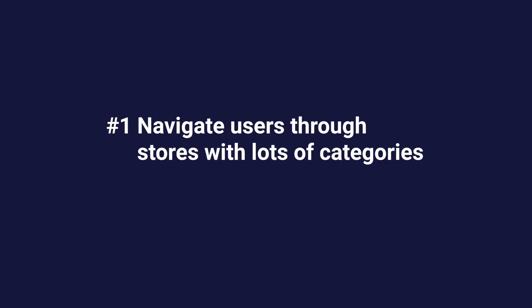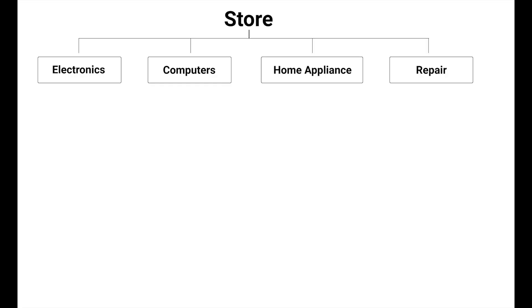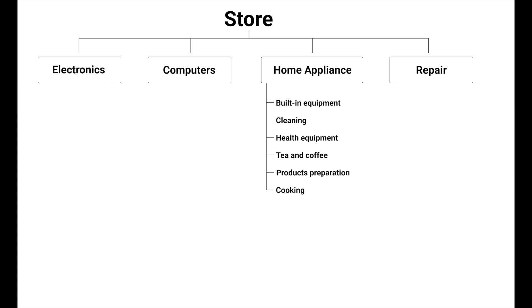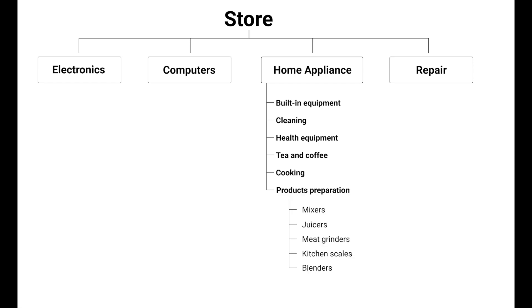Navigate users through stores with lots of categories. Imagine that you have a store with lots of categories — for example, an electronics and home appliance store. Say the store has four main categories with seven to ten subcategories inside. Each subcategory is divided into five to ten subcategories. All in all, that's a lot.